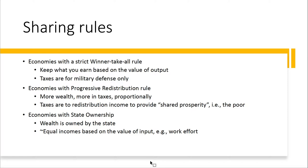Is Sweden a socialist country? Well, not really. It's a market economy, but they use taxation to redistribute wealth across society, so nobody's super rich and nobody's super poor — it squishes the income distribution. Economies with state ownership have wealth owned by the state, with equal incomes based on the value of your input — your work effort — not the value of output. You can think of the former Soviet Union, China, and essentially communist countries where the state owns everything and reallocates wealth accordingly.